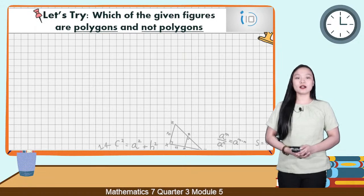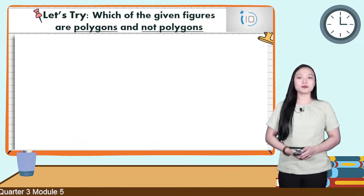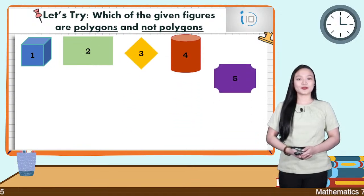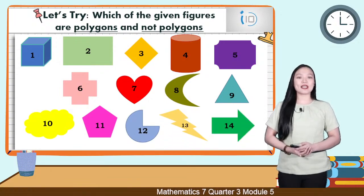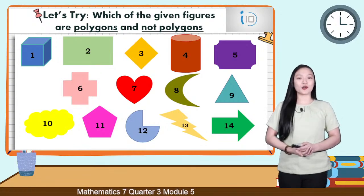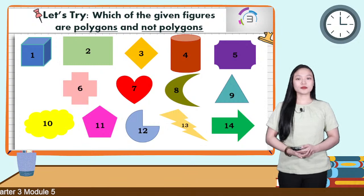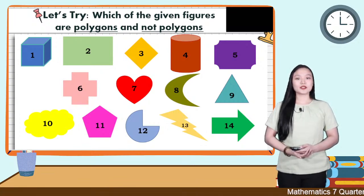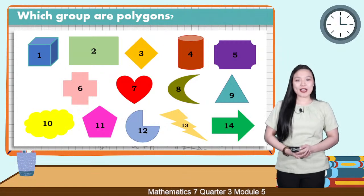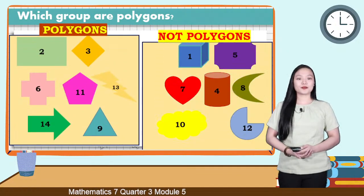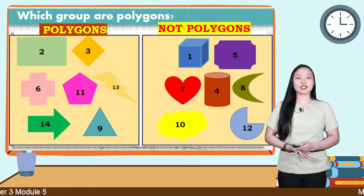To check your prior knowledge about polygons, let's try this. Which of the given figures are polygons and which are not? There are 14 figures and you have 10 seconds to answer. Time's up. Which group are polygons? If your answer is this group of figures, you are correct. Now take a look at group 1 — polygons — and group 2 — not polygons.